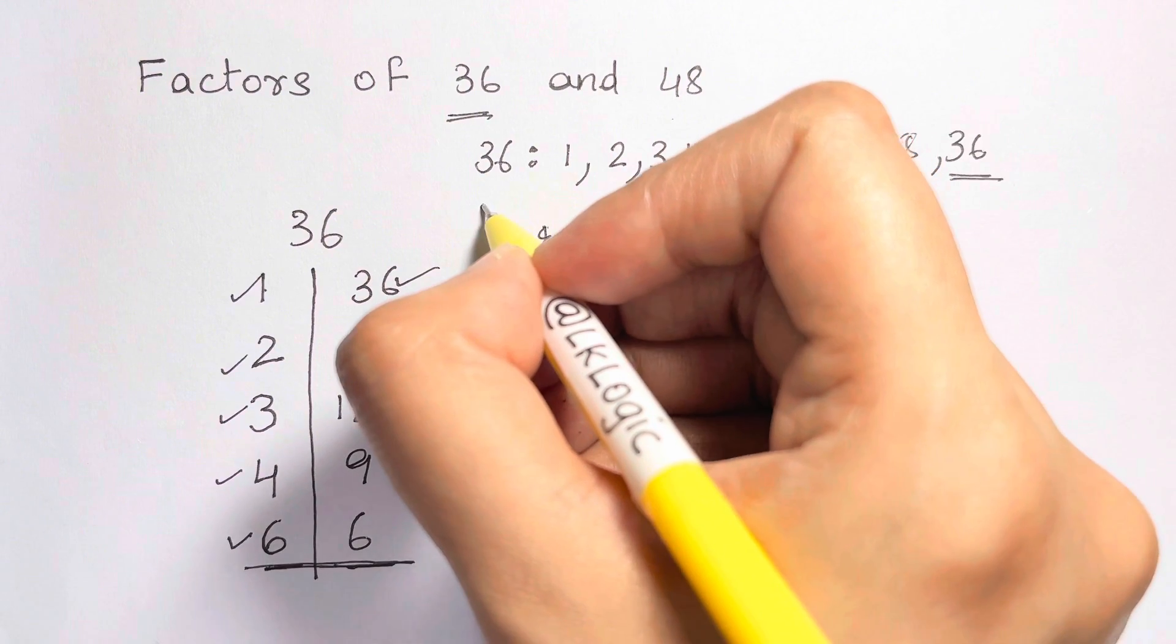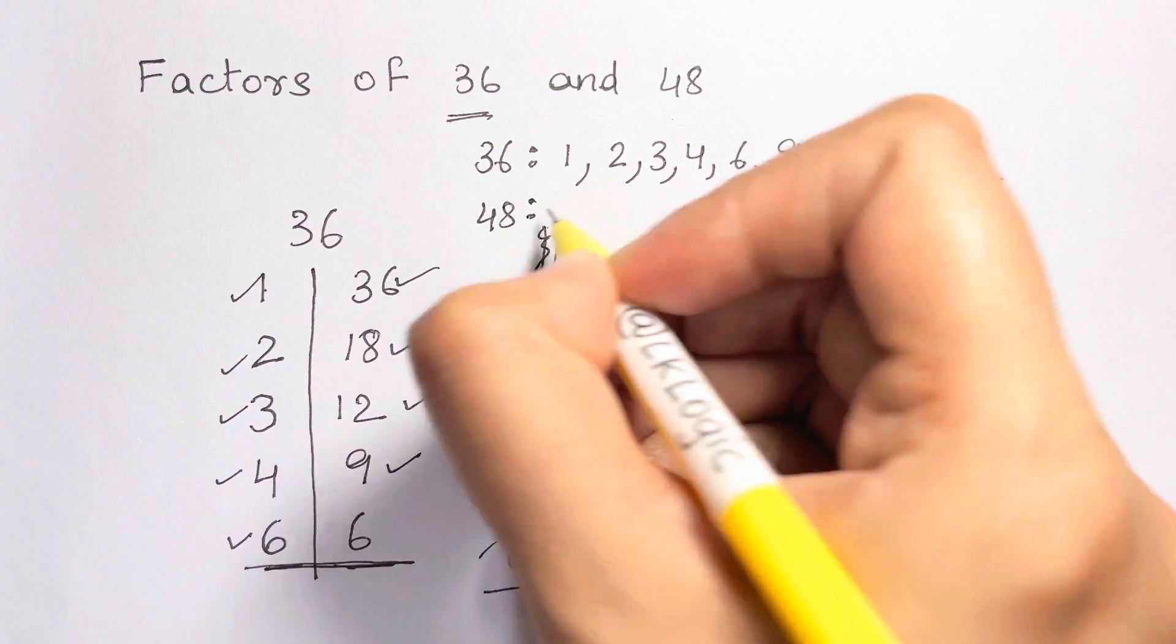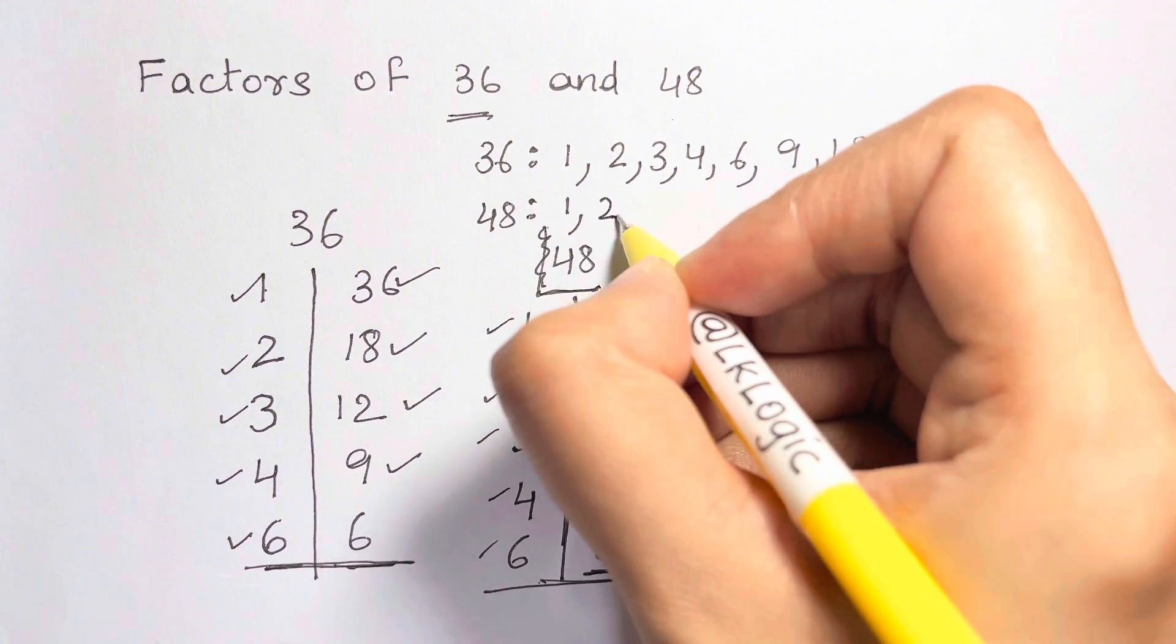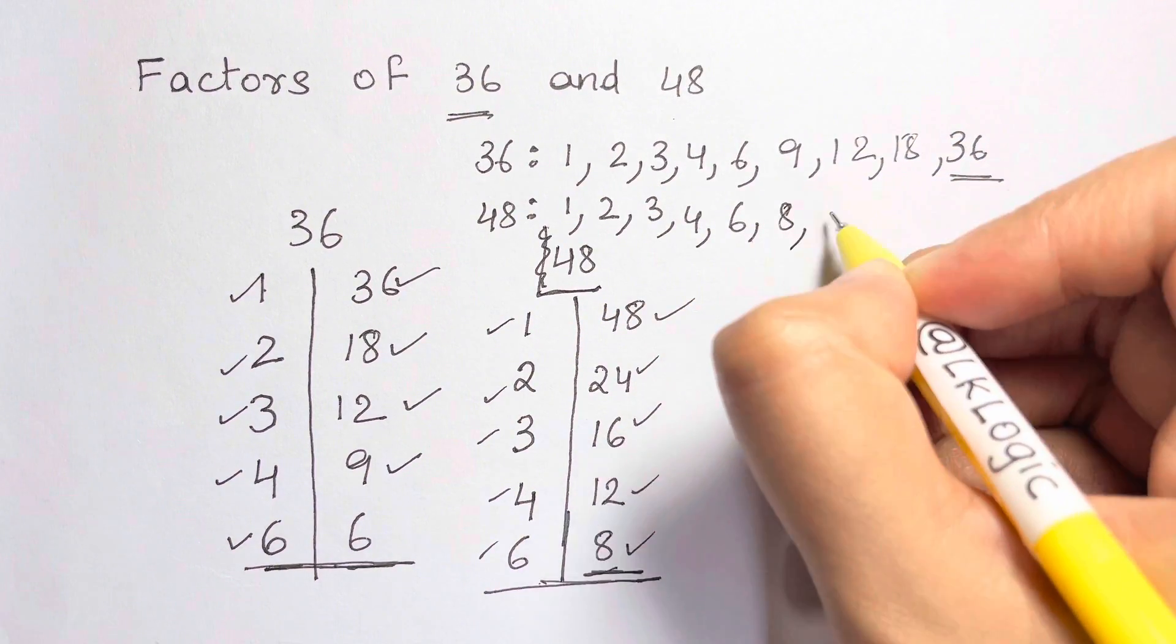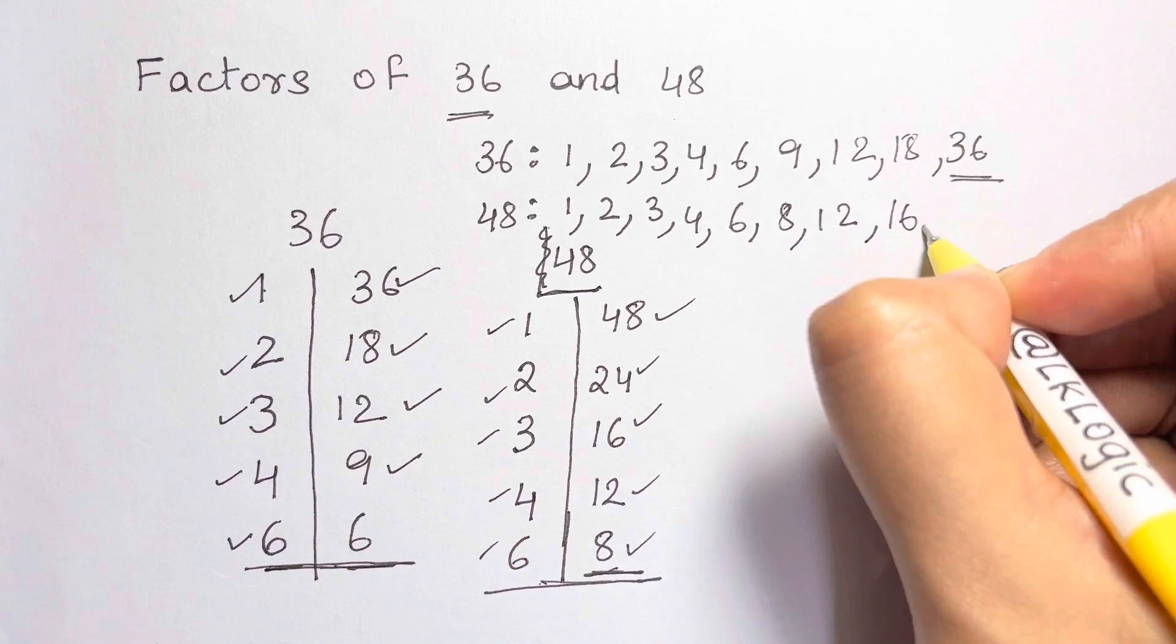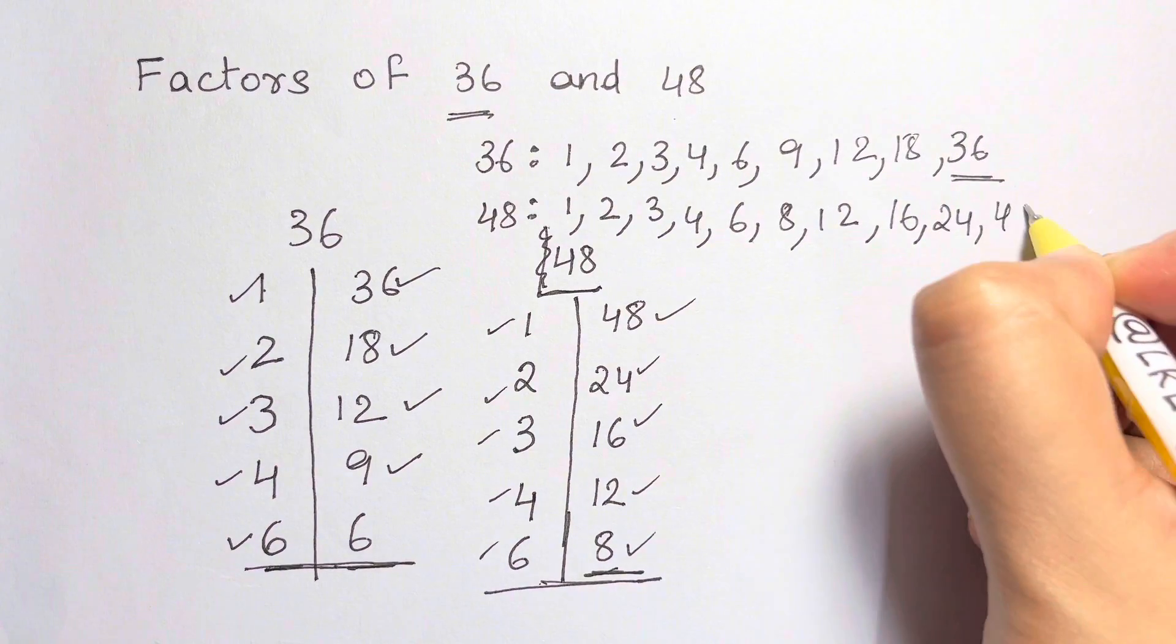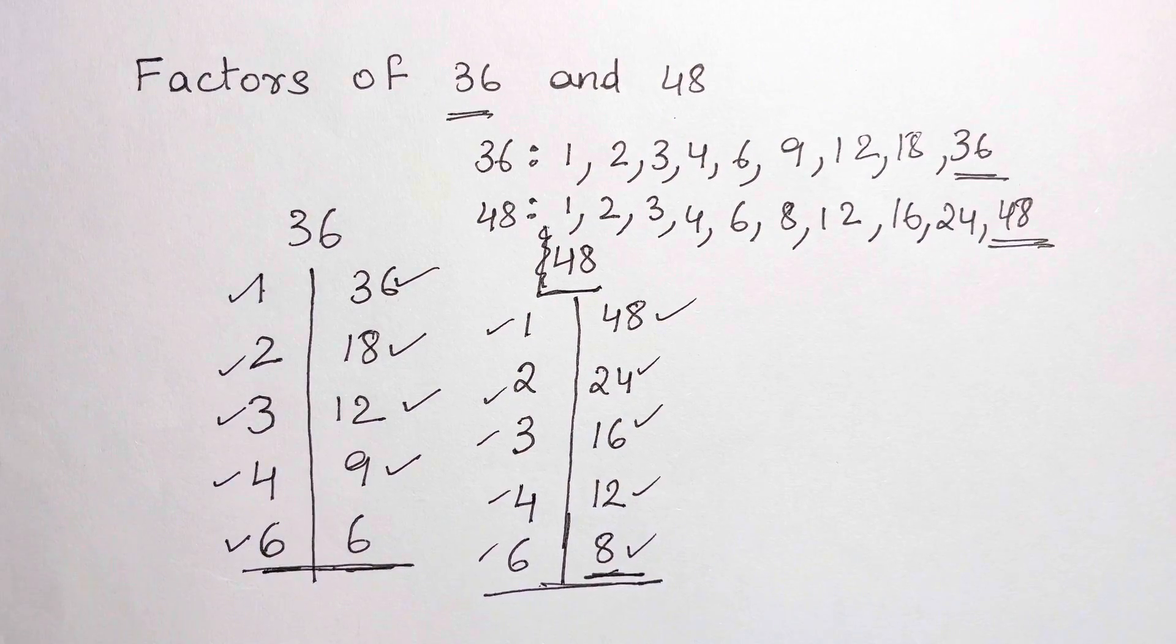So, the factors of 48, we have got 1, 2, 3, 4, 6, 8, 12, 16, 24, and 48. That's how you find factors of any number easily.